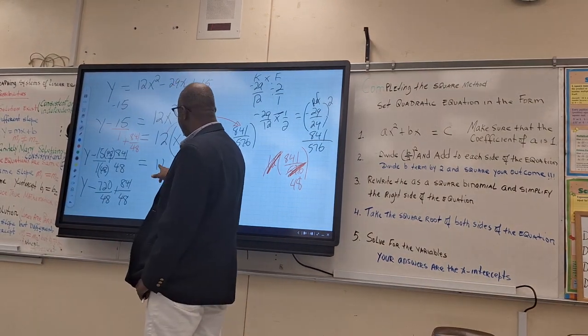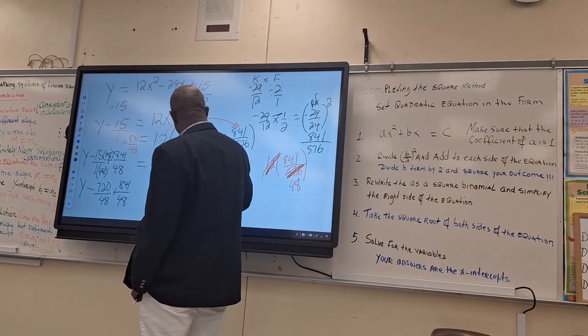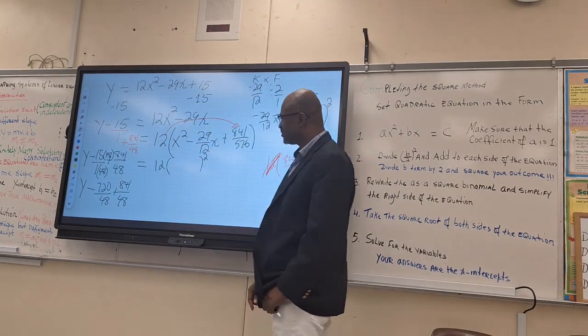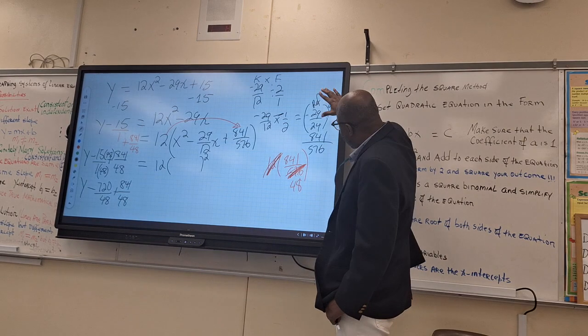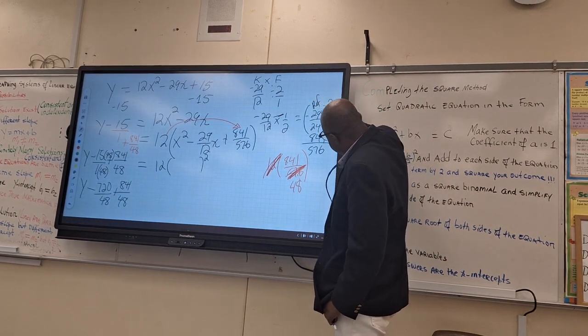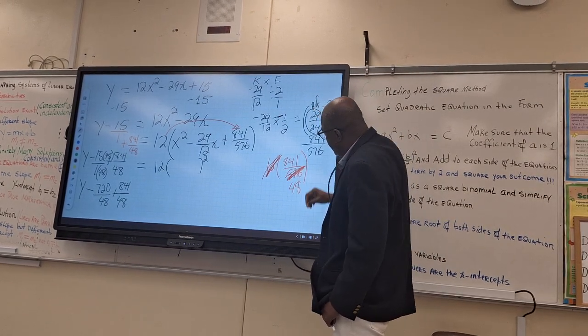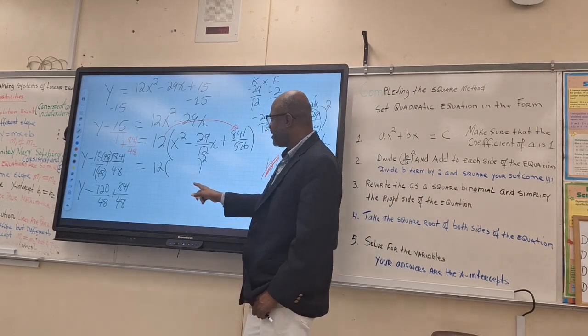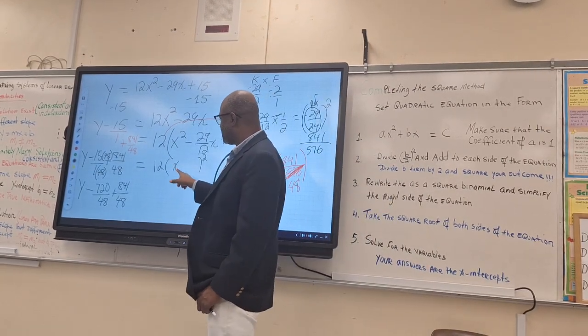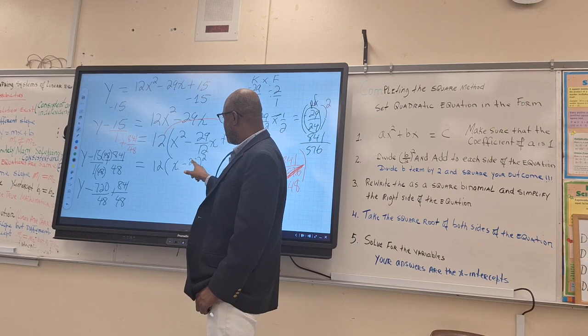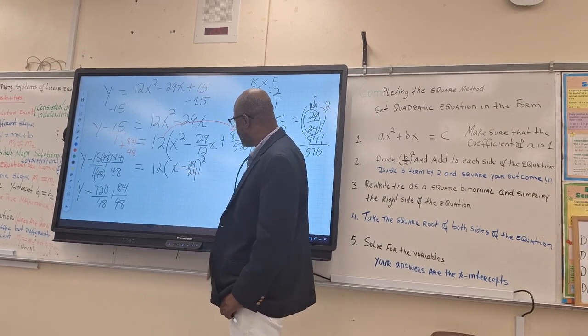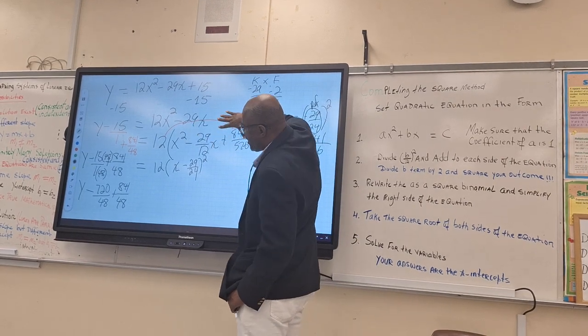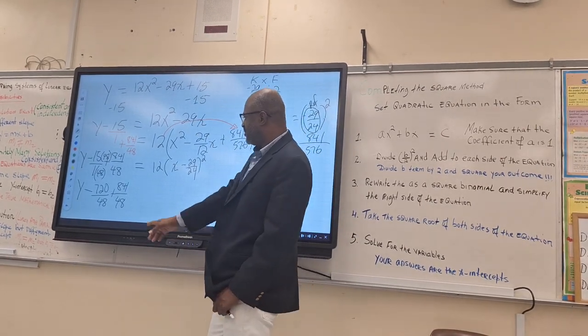You see on that side? So we'll have y minus what is negative 15? 720 over 48 plus 841 over 48. Now we can combine it. And this will be 12 times something squared. Remember that your reference, these guys, that's what going inside the parentheses. So that will be x minus 29 over 24 and the square. Remember this becomes a perfect square trinomial.